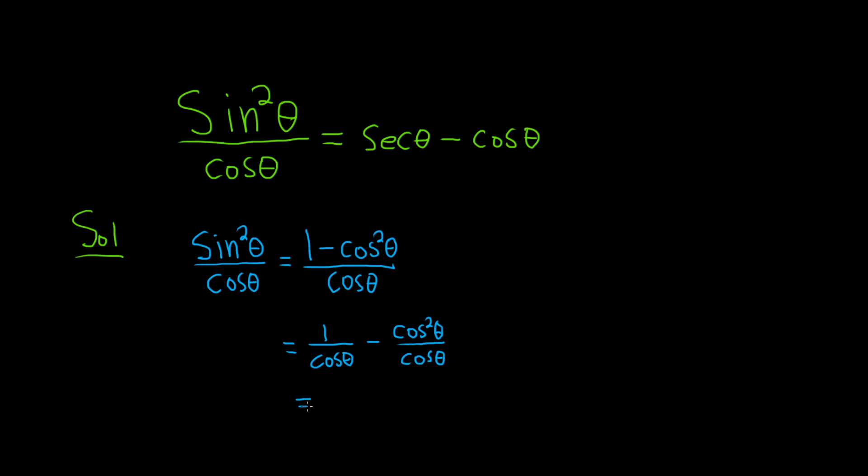1 over cosine is equal to the secant function. We have secant theta, and then minus, and then you lose a cosine here and you're left with one cosine up top. And that's exactly the right-hand side.